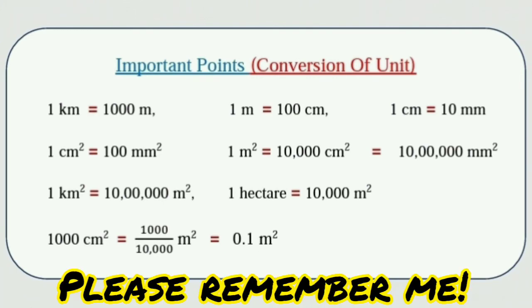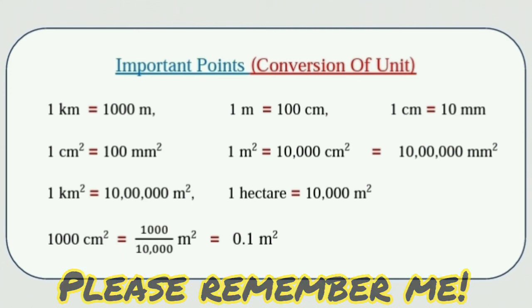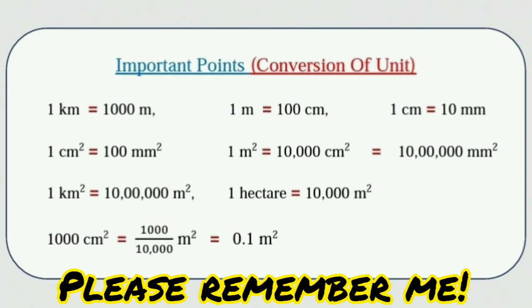1 cm² is equal to 100 mm², 1 m² is equal to 10,000 cm² is equal to 10 lakh mm². 1 km² is equal to 10 lakh m², 1 hectare is equal to 10,000 m², 1000 cm² is equal to 1000 upon 10,000 m² is equal to 0.1 m².